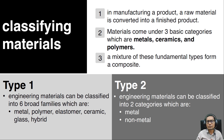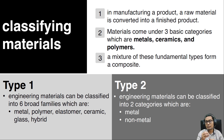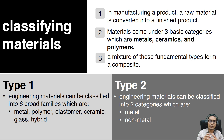How about classifying materials? In manufacturing a product, a raw material will be converted into a finished product. You might have various kinds of materials in a single product. For example, in an integrated telephone system, you will have plastic for the top and bottom cabinet, rubber material used for the dial keys, and so on. Materials come under three basic categories: metals, ceramics, and polymers. A mixture of these three fundamental types forms a composite.